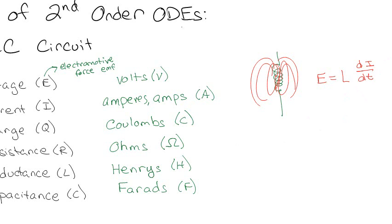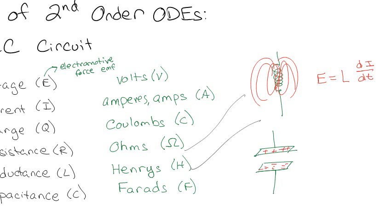A capacitor consists of two parallel plates. Basically, charges accumulate on each side, and that also creates a voltage. For a capacitor, the current that can flow across it equals the capacitance times the derivative of the voltage — so the rate of change of the voltage across the capacitor times its capacitance tells you how much current goes through it.